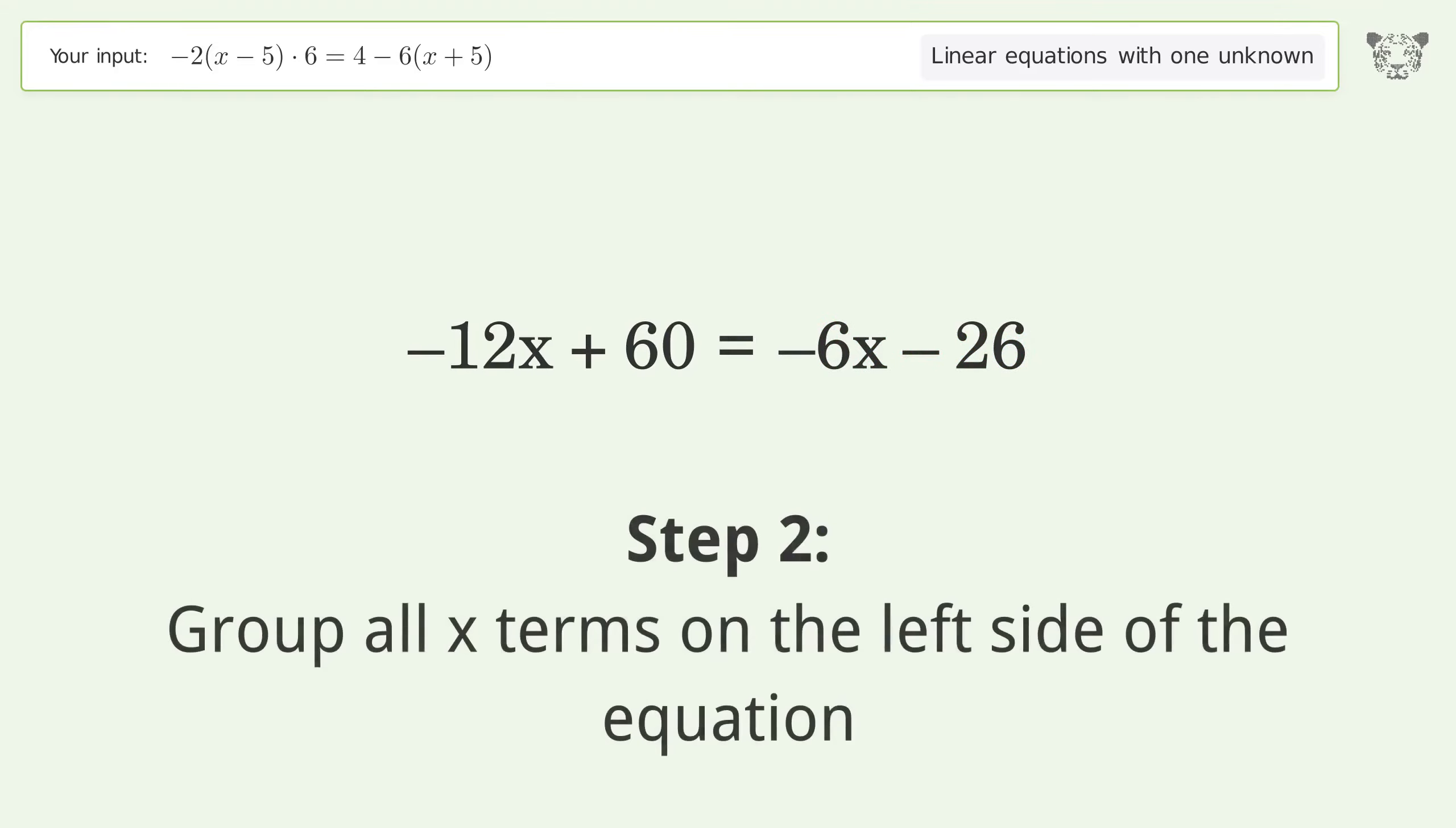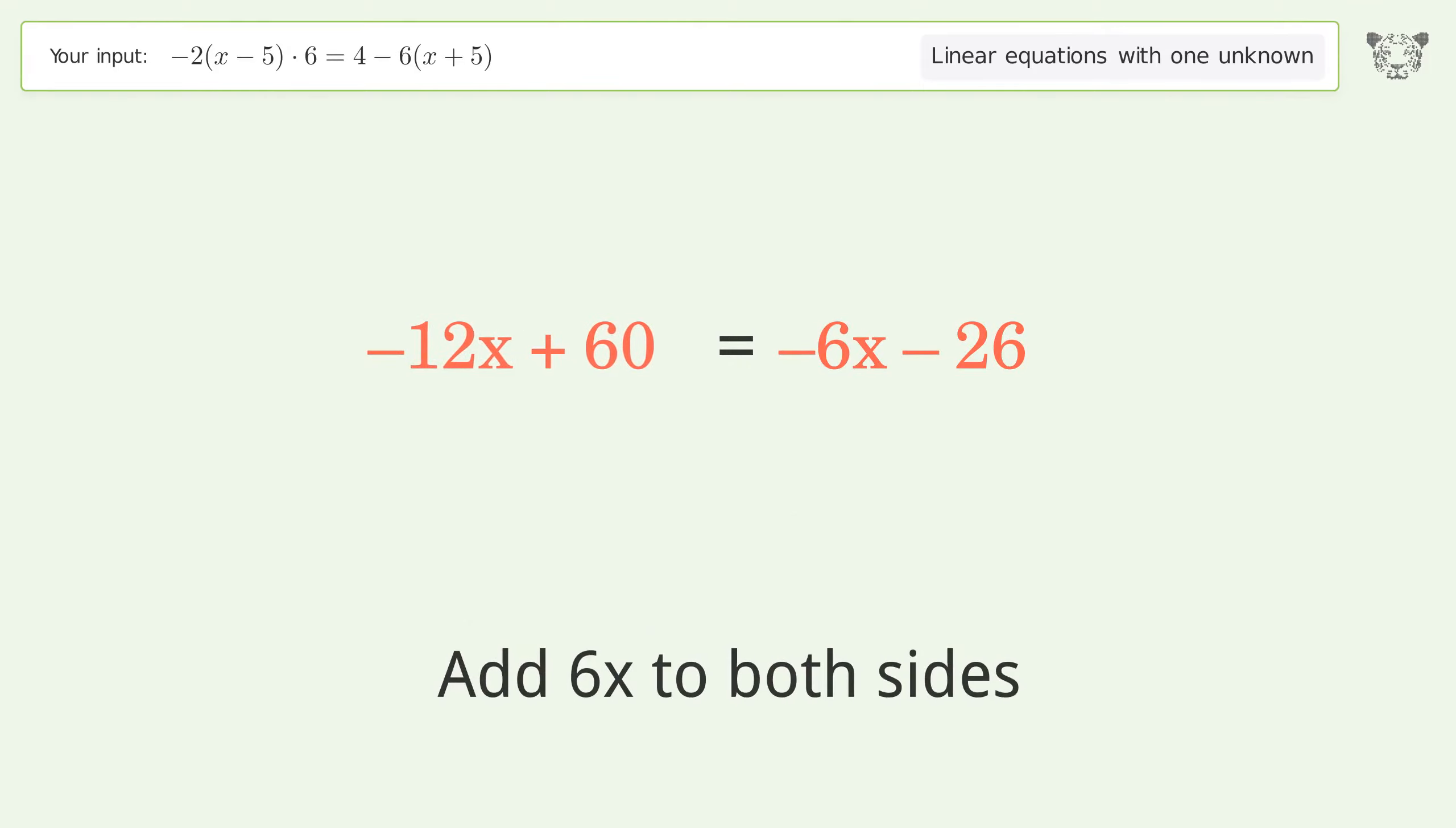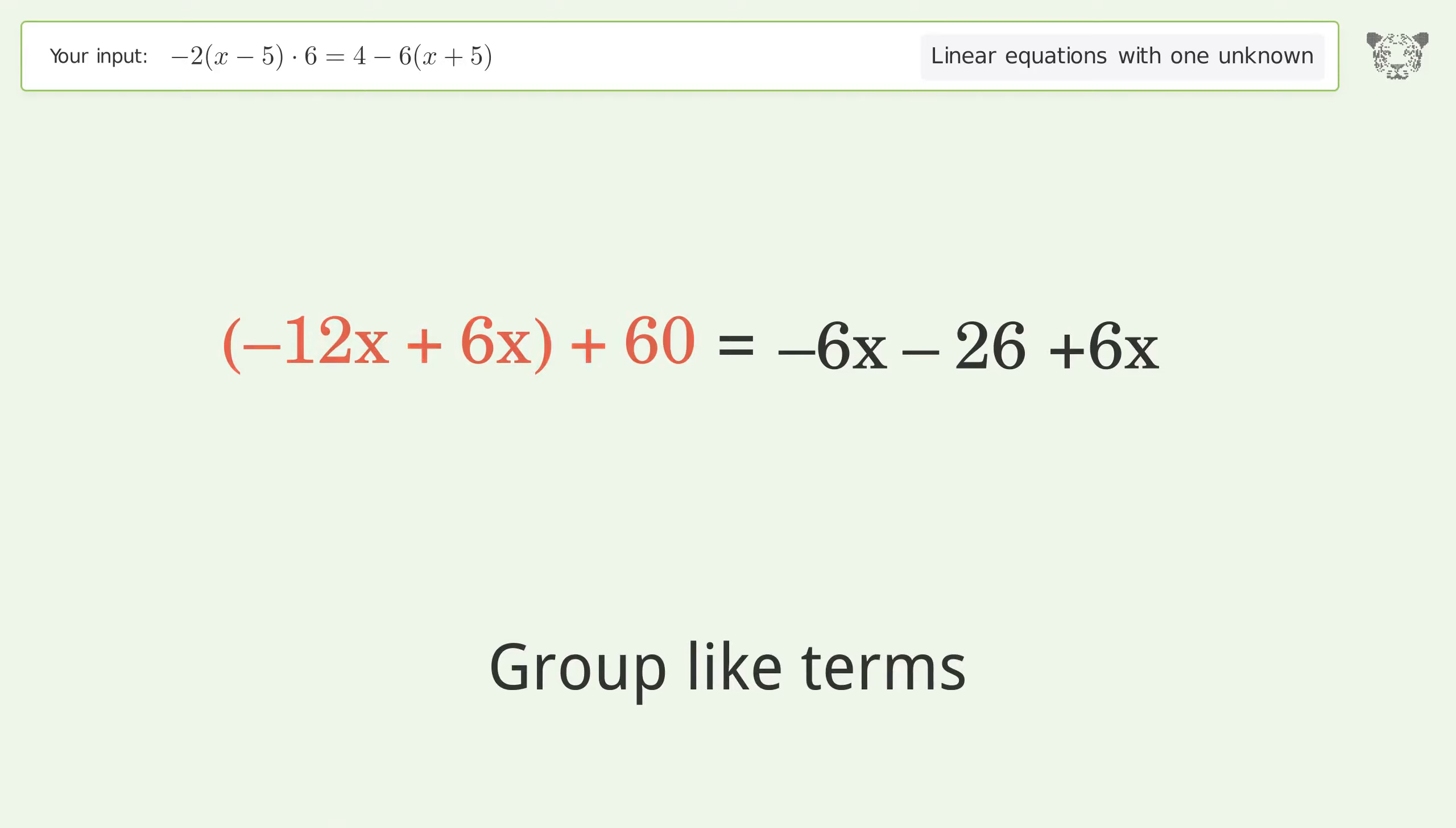Group all x terms on the left side of the equation. Add 6x to both sides. Group like terms. Simplify the arithmetic.